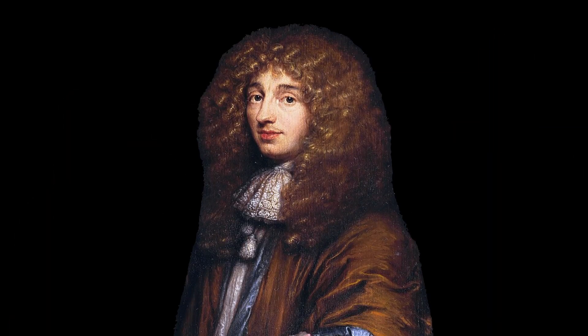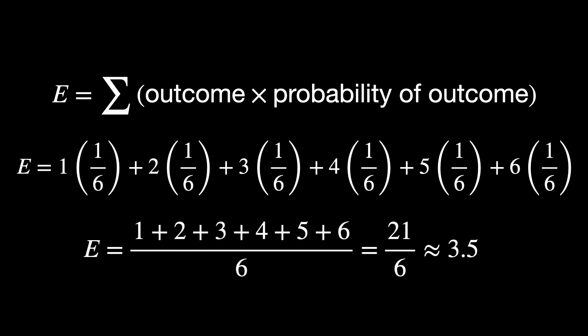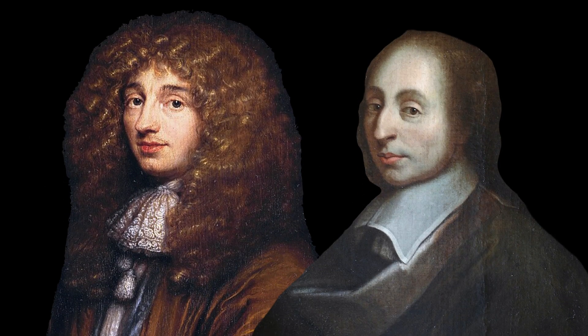Christian Huygens expanded on Pascal's ideas and published the first full treatise on probability, on reasoning in games of chance. He introduced the concept of expected value, which provides a way to calculate the average outcome of a probabilistic event. Suppose you roll a fair six-sided die and receive the number of dollars shown — the expected value E helps you decide whether it's worth playing. On average, you would expect to win $3.50 per roll, providing a straightforward method to analyze the game's fairness or value. These contributions by Pascal and Huygens not only solved practical problems in gambling, but also laid down the mathematical foundations important for the development of game theory.